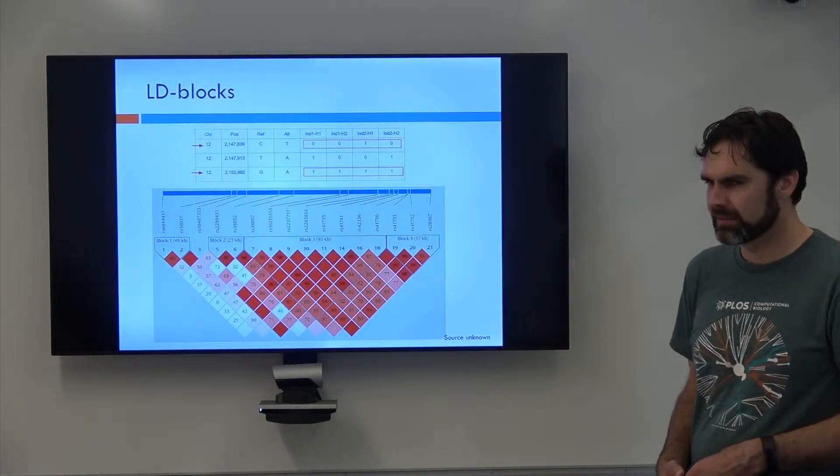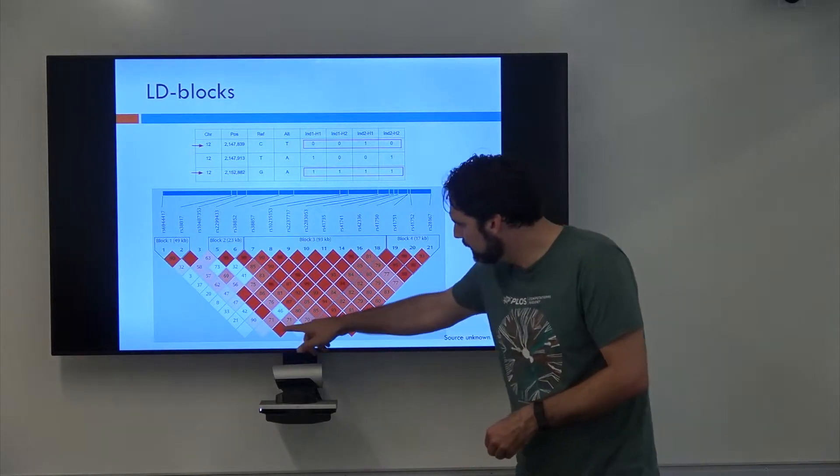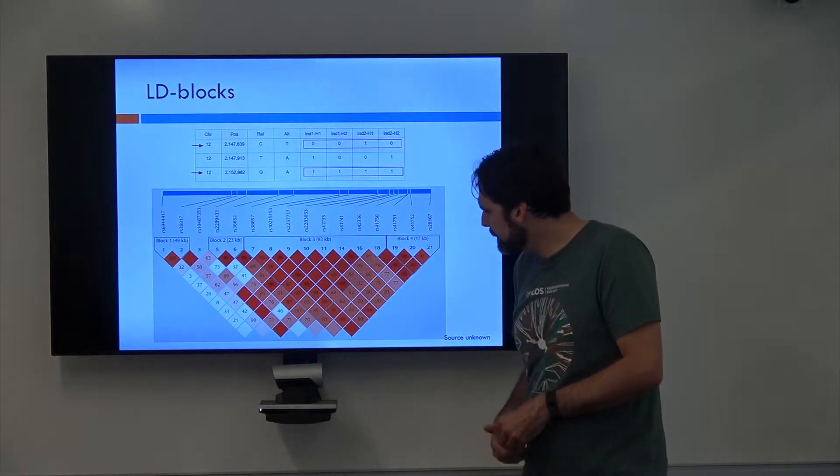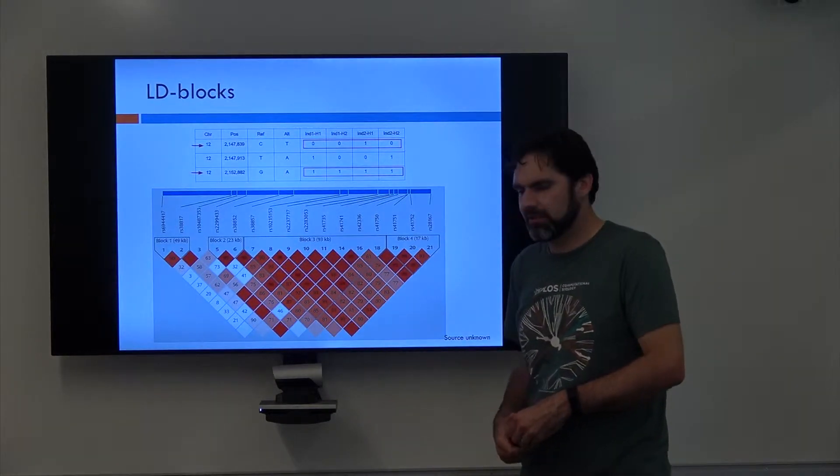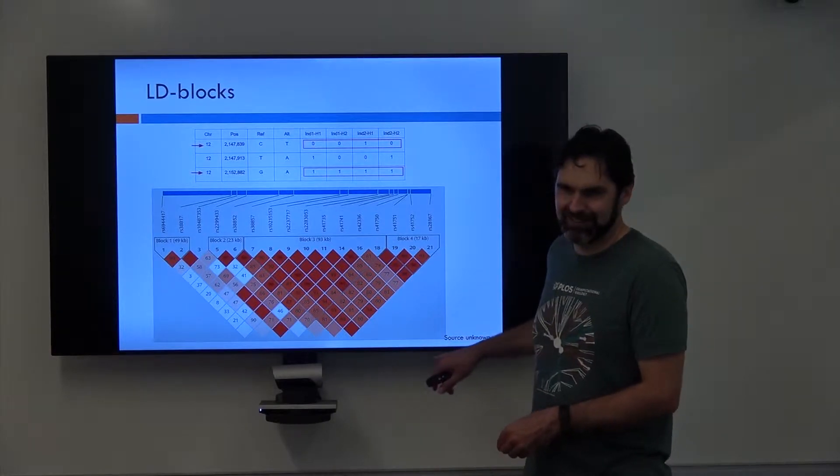Yeah, like for the red squares without, or like for any squares without the numbers? These down here? Or like up there with the numbers up there? These guys? I don't know why those don't have numbers and this is a source unknown photo.